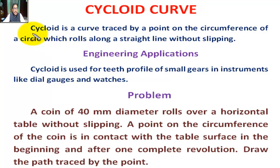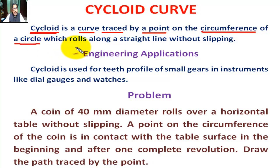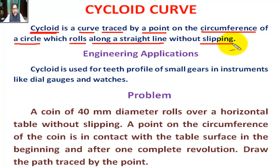First, what is a Cycloid? A Cycloid is a curve traced by a point on the circumference of a circle which rolls along a straight line without slipping.